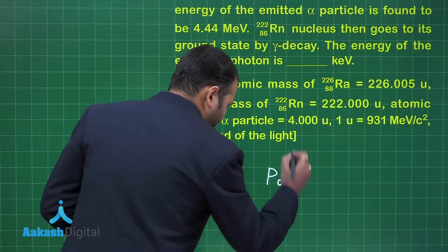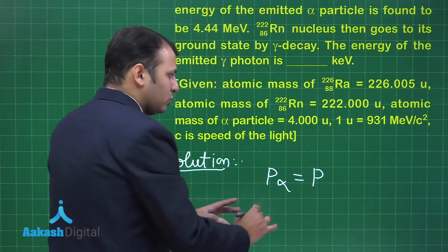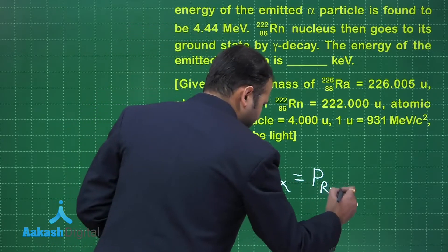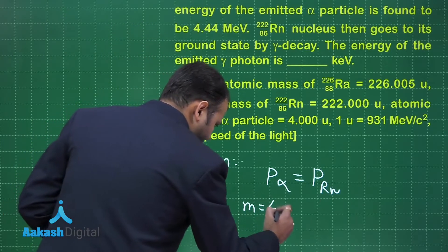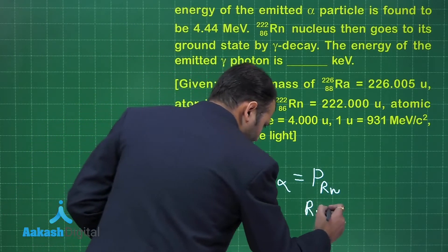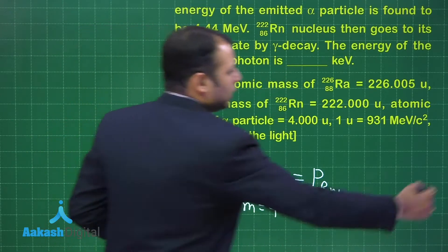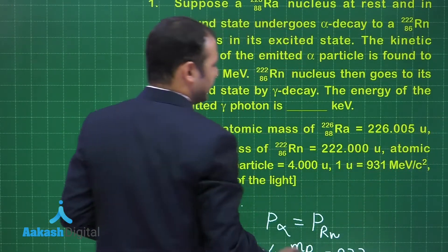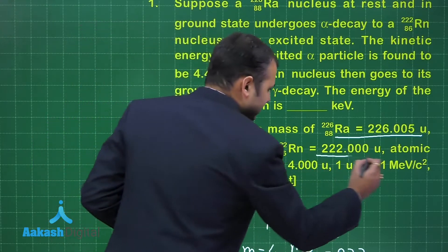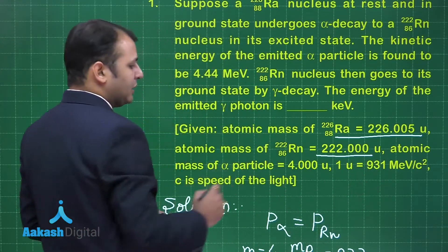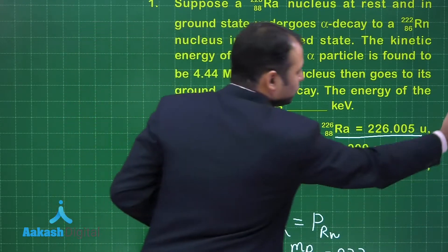By momentum conservation, it is very important to understand that the momentum of the alpha particle would be equal in magnitude to the momentum of the radon nucleus. The mass of the alpha particle is 4 and the mass of the radon nucleus is 222. Now, the radium nucleus had a certain mass, and the two components formed — the radon nucleus and the alpha particle — give us the total mass defect which will yield the energy.